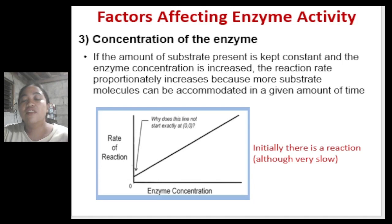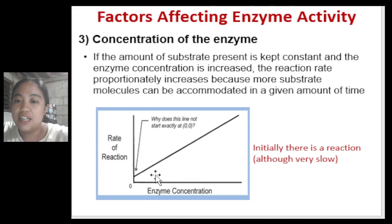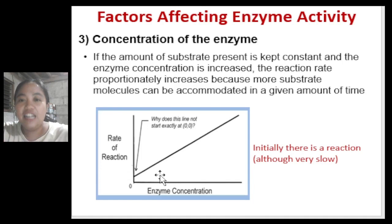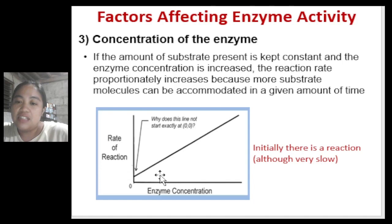Another factor affecting enzyme activity is the concentration of the enzyme. If the amount of substrate is kept constant and enzyme concentration is increased, the reaction rate proportionately increases because more substrate molecules can be accommodated in a given amount of time. The plot of reaction rate versus enzyme concentration shows a proportional linear increase.